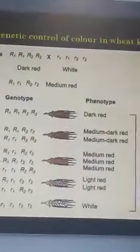One more example: height and skin color in human beings are also controlled by three pairs of genes. Polygenic inheritance is explained here with the help of wheat kernel color.